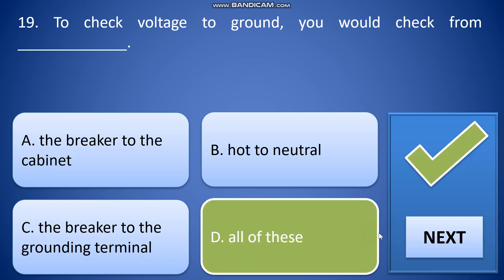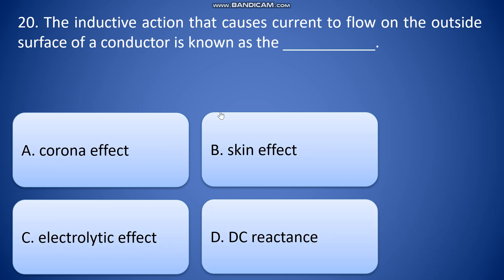20: An inductive action that causes current to flow on the outside surface of the conductor is known as: A: corona effect, B: skin effect, C: electrolytic effect, D: DC reactance. So the answer is B, skin effect.